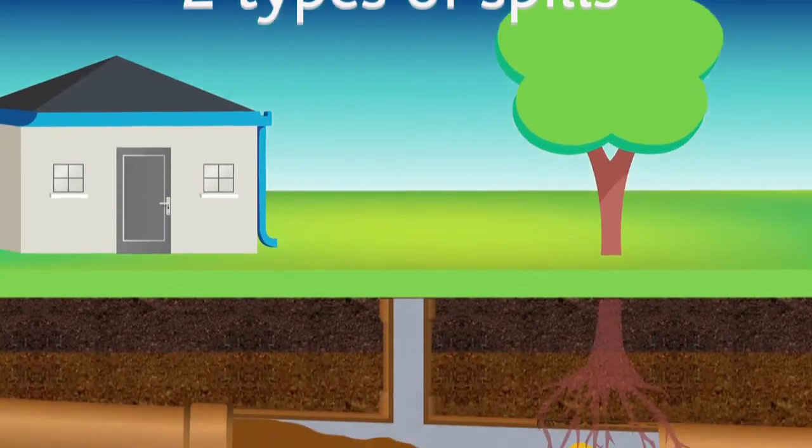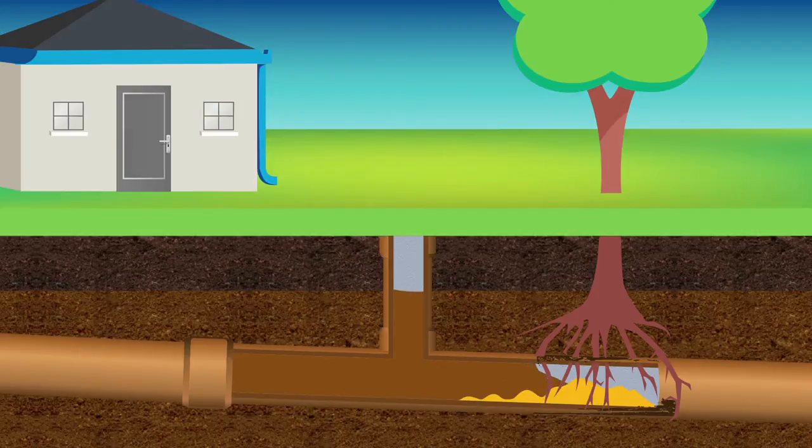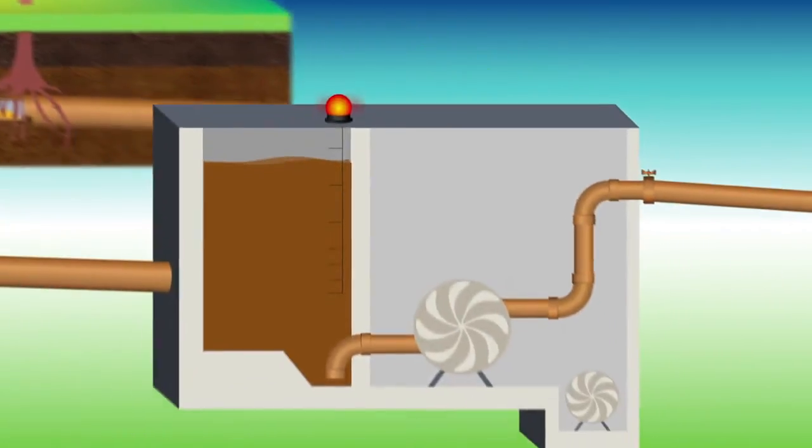The first is a spill that happens when equipment breaks down. Pipes can get blocked or break, mostly due to tree roots and excessive fats and oils in the system, or equipment at a pump station can fail.